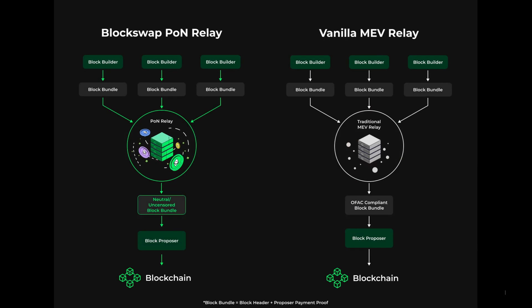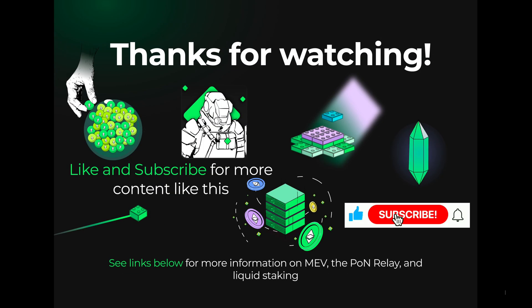The PON relay will bring back neutrality to Ethereum. Here we can see the differences in the blocks that are proposed into the blockchain. The PON relay uses zero-knowledge proofs and encryption to ensure privacy and security. Relays play a critical role in the functioning of the Ethereum blockchain, and we only expect relays to become more popular. The proof of neutrality relay is a promising solution to centralized relays and is an innovation worth knowing about. If you want to learn more about the PON relay or MEV in general, check out the links below. Thanks for watching, and I hope this video was helpful in understanding the role of relays in Ethereum and MEV.